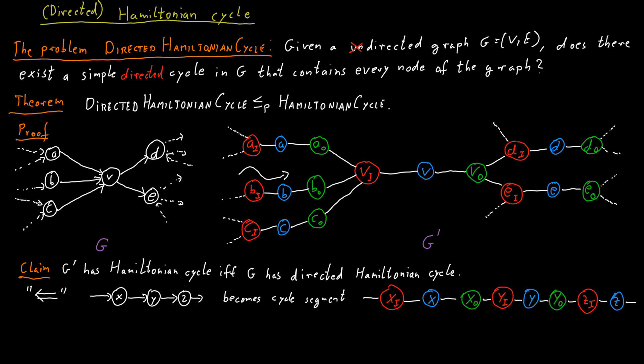So we just follow the nodes in the same order, but always go to the incoming node, then the node itself, then the outgoing copy of the node. This will be a Hamiltonian cycle in this undirected graph because we visit all of the nodes in a simple cycle.